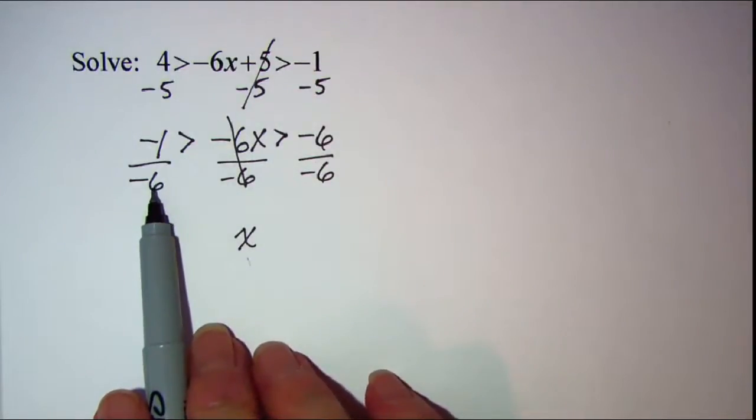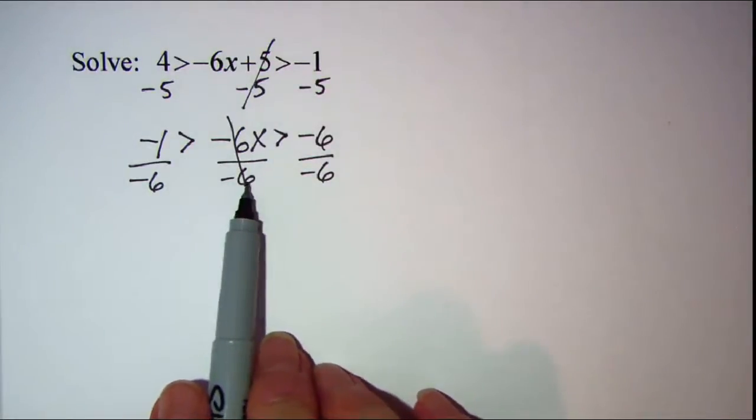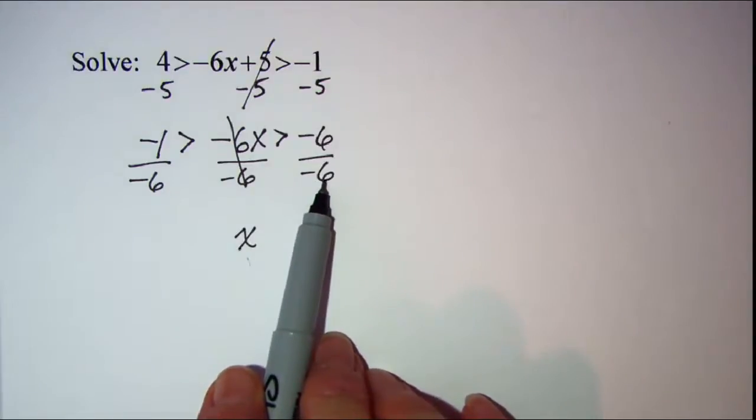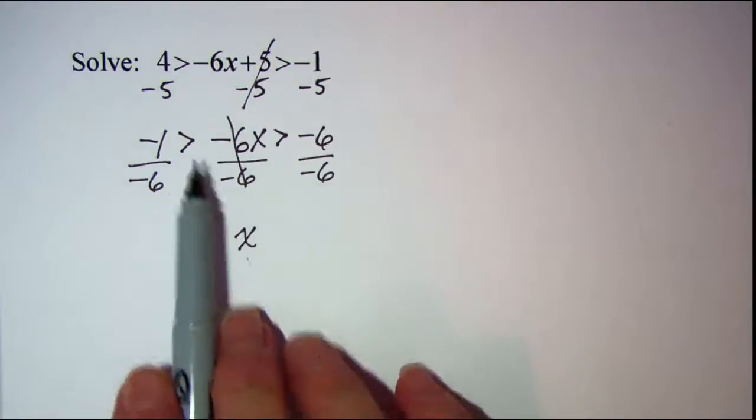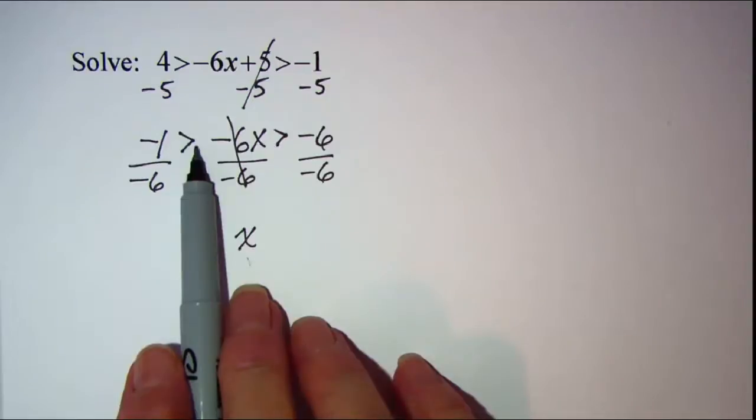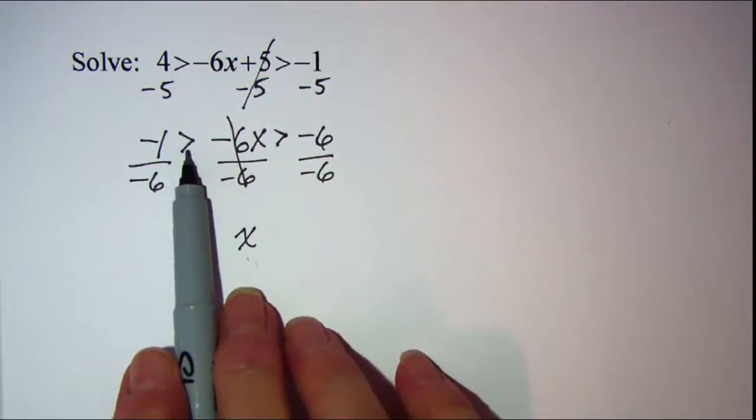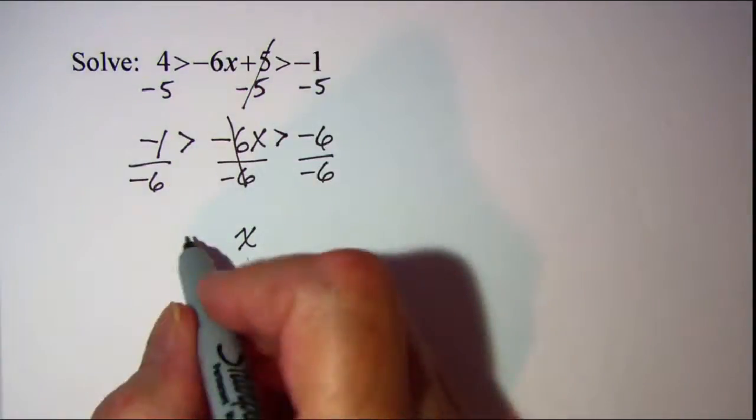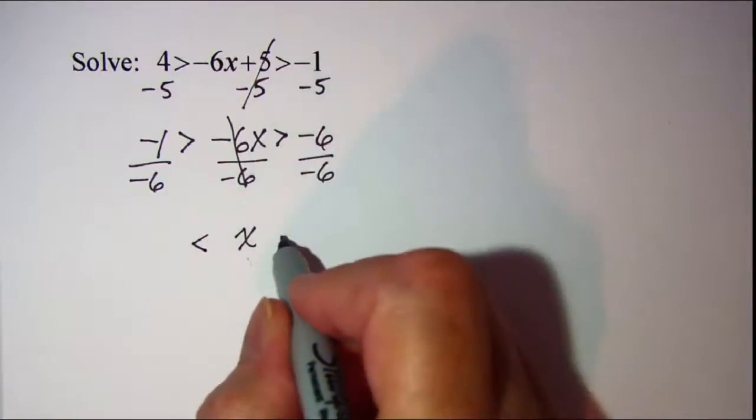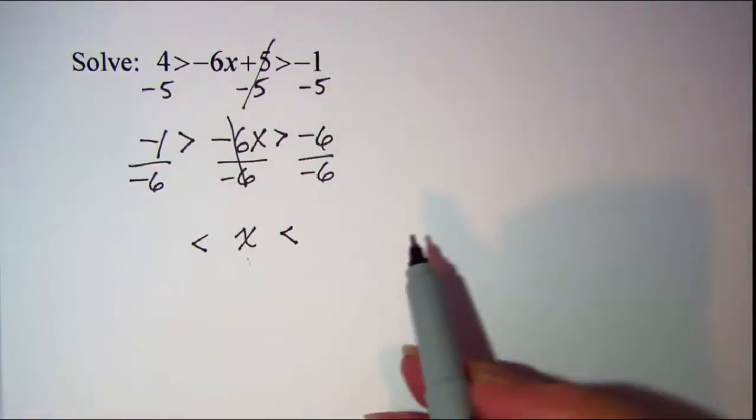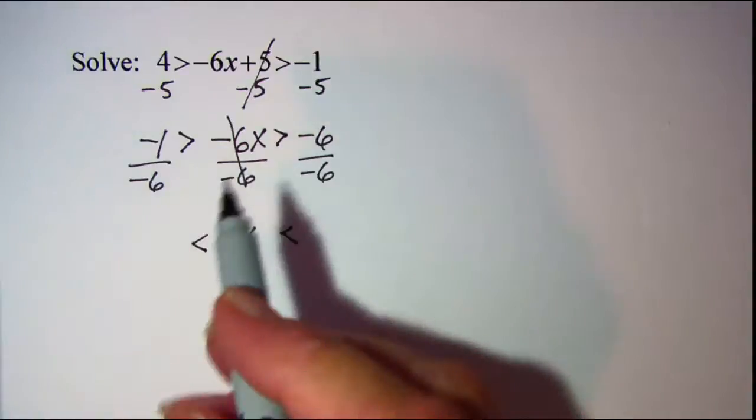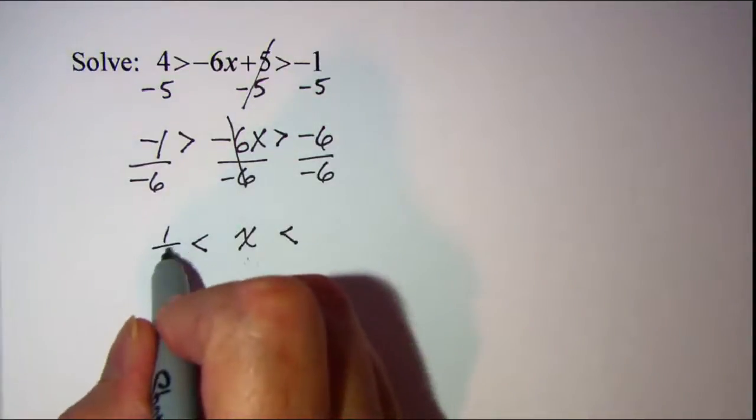But remember that when you multiply or divide an inequality by a negative number, you have to change the direction of your inequality sign, so instead of pointing to the right now, I need for those to be less than symbols, and then negative one divided by negative six is one-sixth.